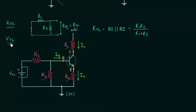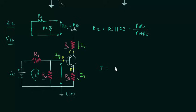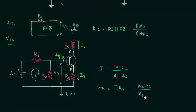Now we will calculate Thevenin's voltage. In order to calculate VTH, we need to calculate the current in this loop. I will remove the short circuit and calculate the current I in the loop. The current I is equal to Vcc divided by R1 plus R2 — you can use KVL to find this value. To find the voltage drop across resistance R2, which is simply VTH, we multiply current by R2. So VTH equals I times R2, or simply R2 times Vcc divided by R1 plus R2.